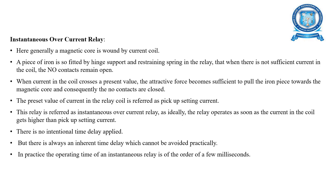First is the instantaneous overcurrent relay. Here, a magnetic core is formed by the current coil, and a piece of iron is fitted via a hinge support with a restraining spring, such that when there is insufficient current in the coil, the normally open contacts remain open. When the current in the coil crosses the preset value, the attractive force becomes sufficient to pull the iron piece towards the magnetic core, and consequently the normally open contacts are closed.